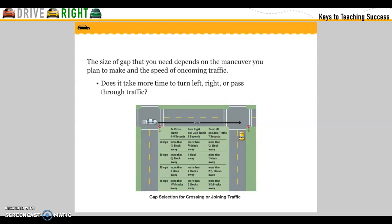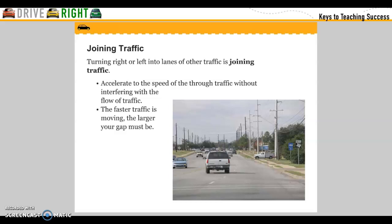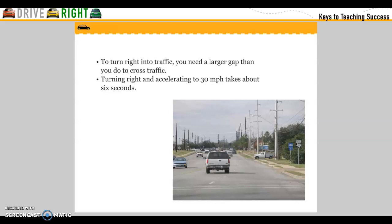Does it take more time to turn left, right, or pass through traffic? Joining traffic by turning right or left in two lanes requires you to accelerate to the speed of through traffic without interfering with its flow. The faster traffic is moving, the larger the gap must be. To turn right into traffic, you need a larger gap than you do to cross traffic. Turning right and accelerating to 30 miles per hour takes about 6 seconds.